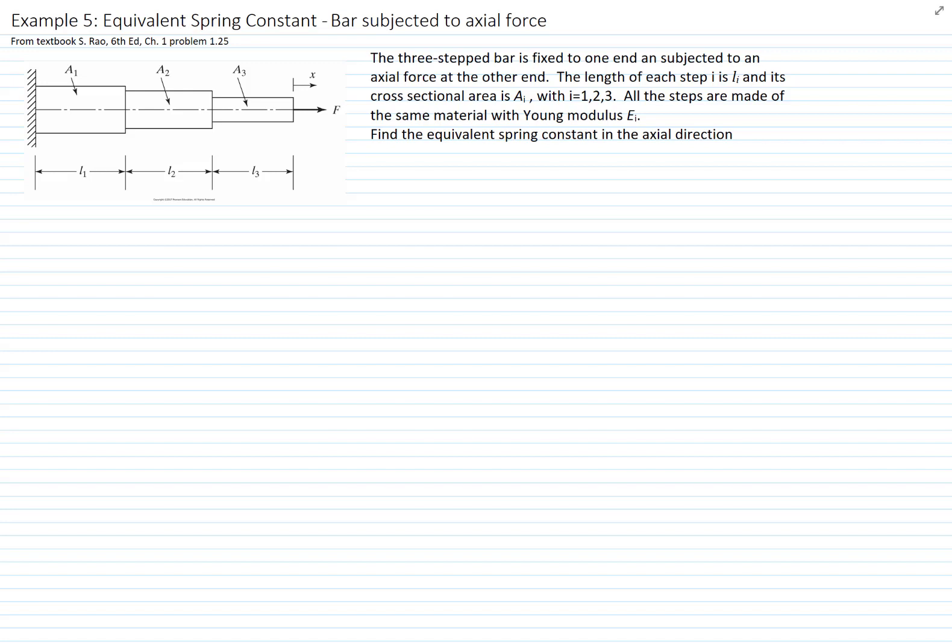We have three bars, and each bar has a length l, so bar 1 has length l1, bar 2 has length l2, and bar 3 has length l3. And they have cross-sectional area a1, a2, and a3.